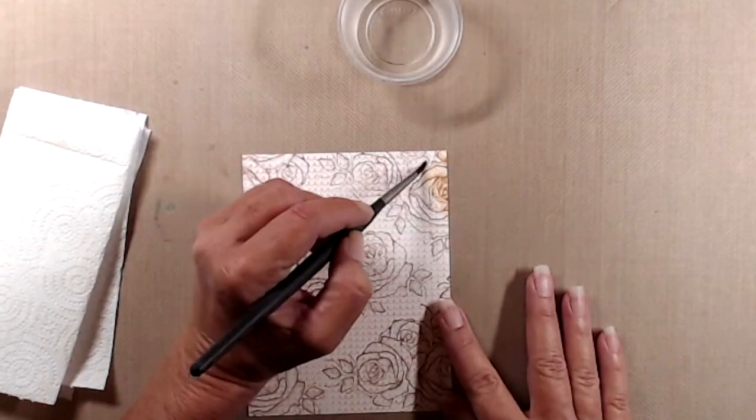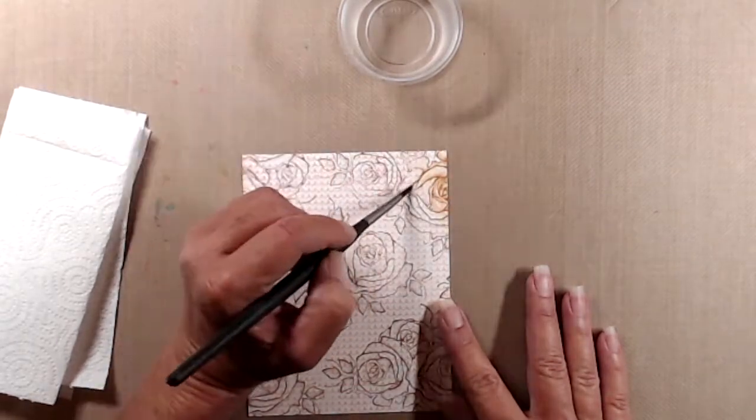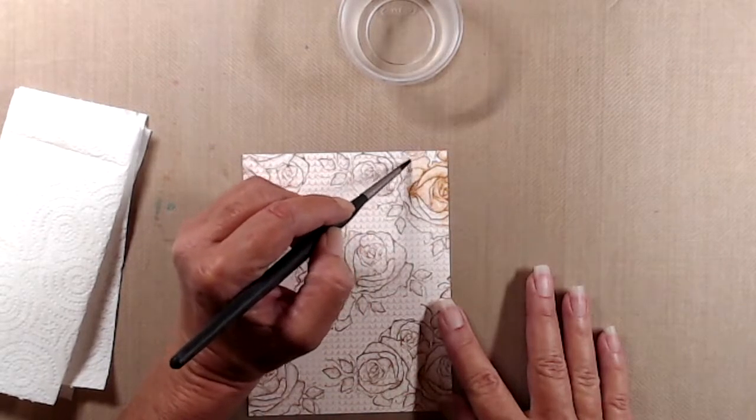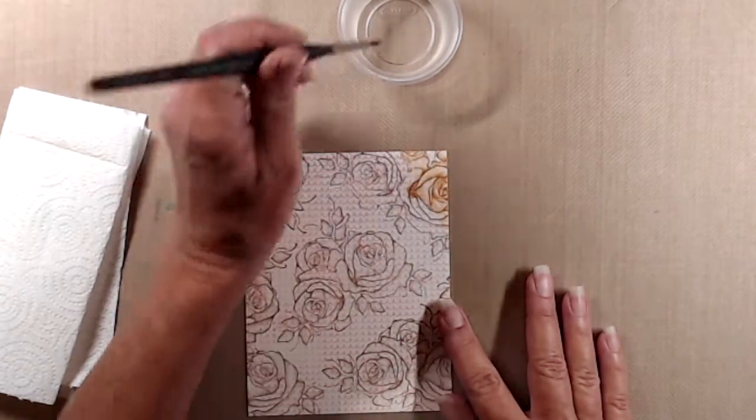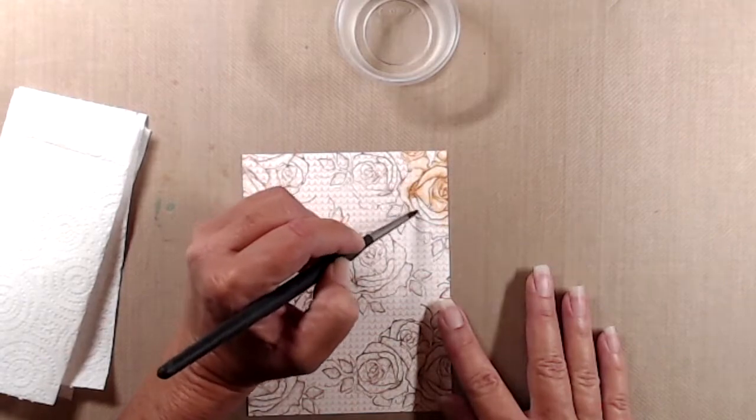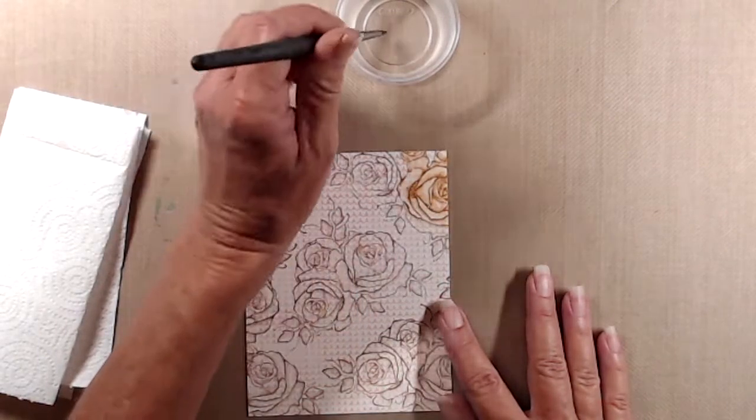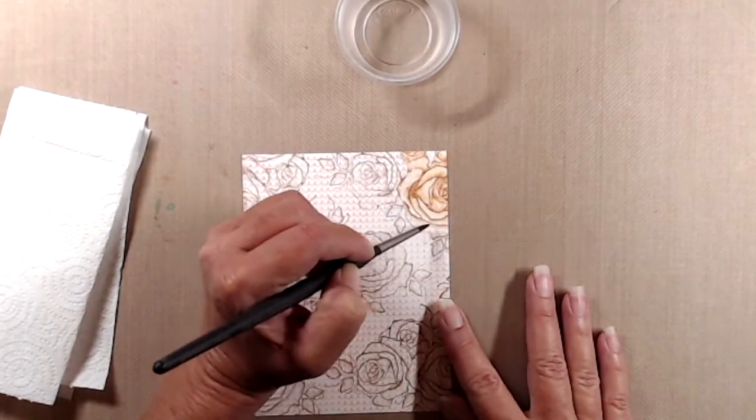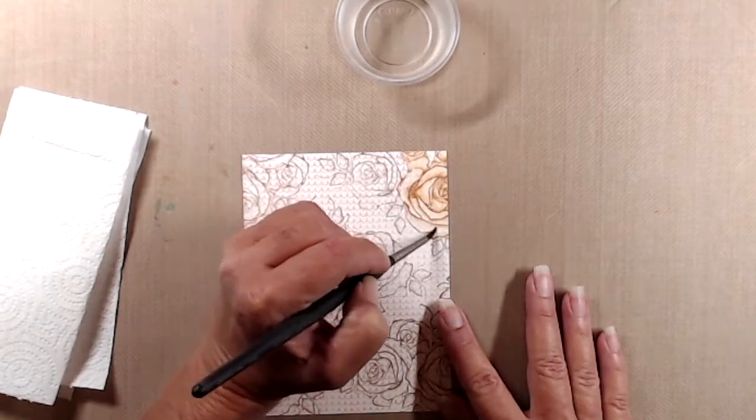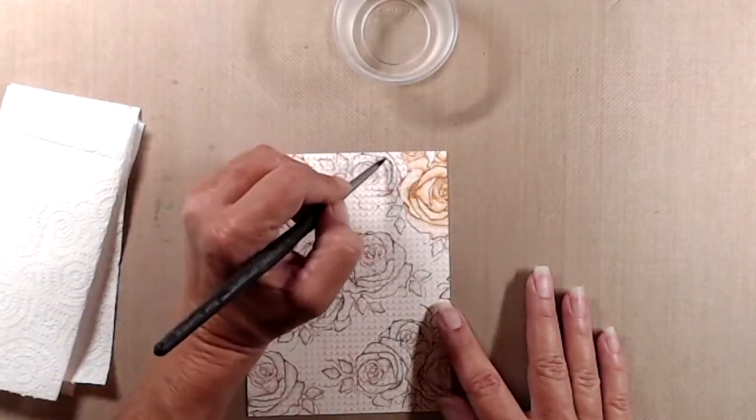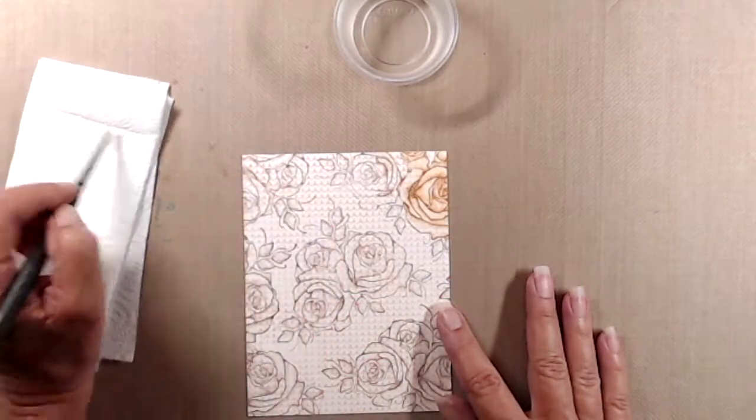At first I really wasn't too sure that the roses were going to work on top of that background because the roses are so very detailed and the cross stitch hearts background is so very textured. But I decided to give it a shot and I was really happy with how this turned out.